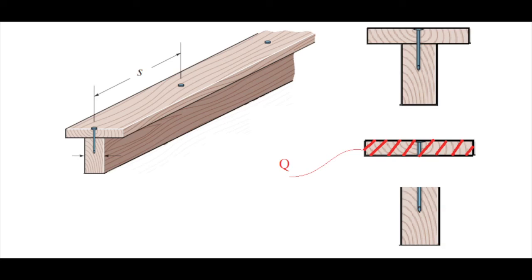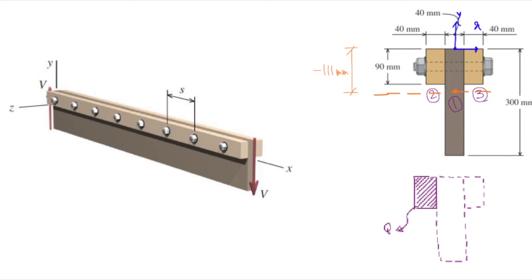Q is always calculated for the part of the section that you want to connect to the rest of the body. For this problem, Q should be calculated for the top part of the beam. Looking at the section, if you are considering only element number two, then there is just one bolt connecting it to the rest of the body, and it is in single shear. That determines the effective shear area.